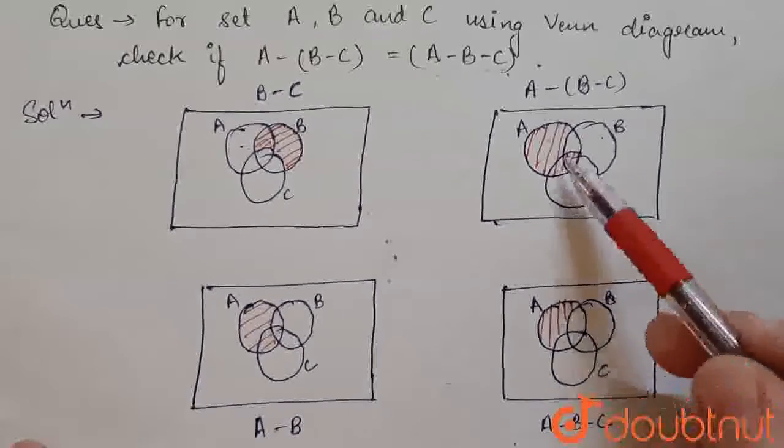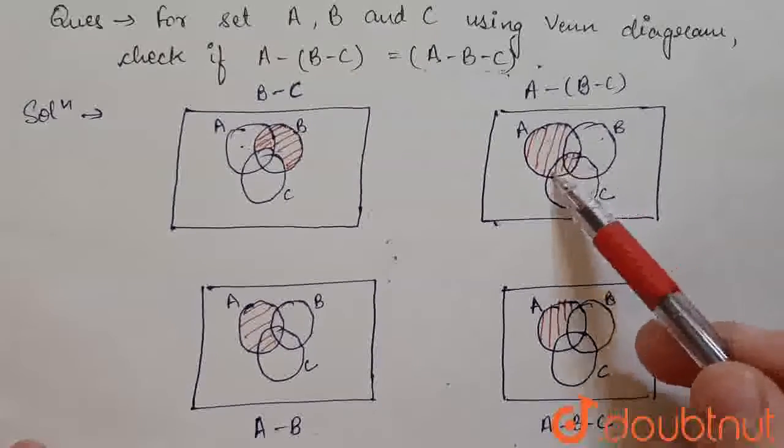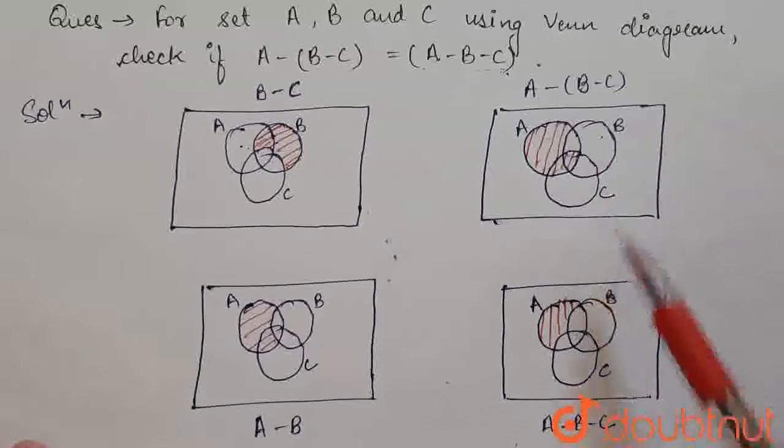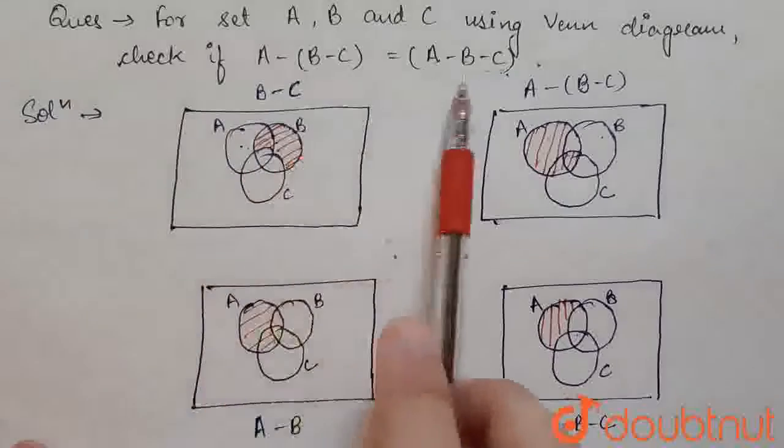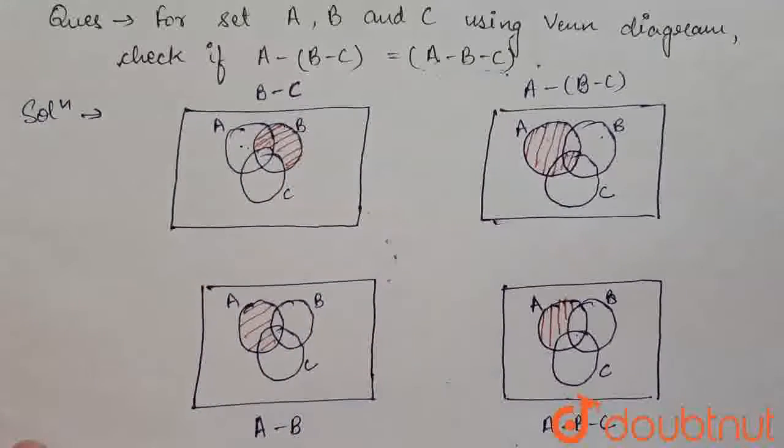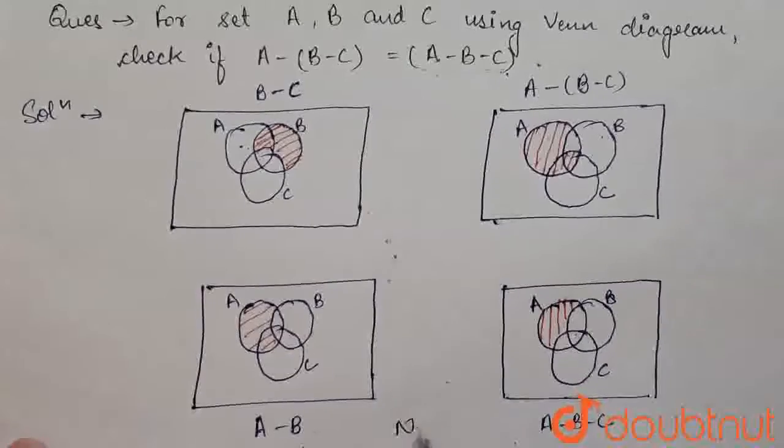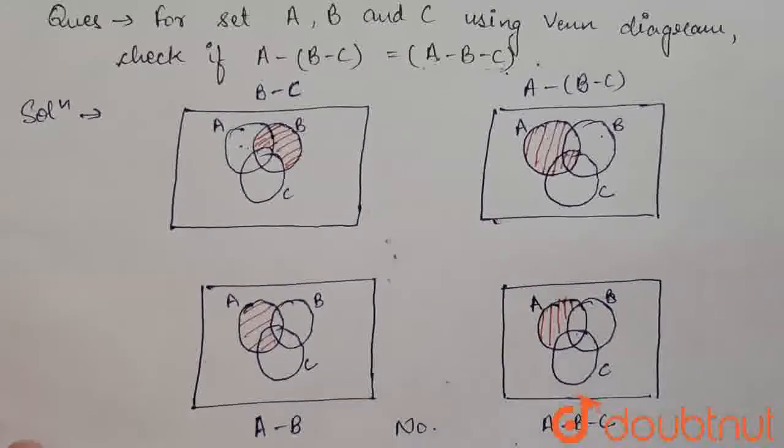As you can see, this part includes A intersection B also, but this part does not include this. So, they are different. Therefore, these values are not equal. So, our answer is no. They are not same. Thank you.